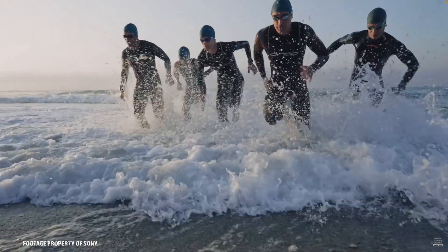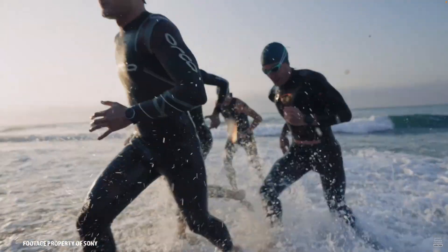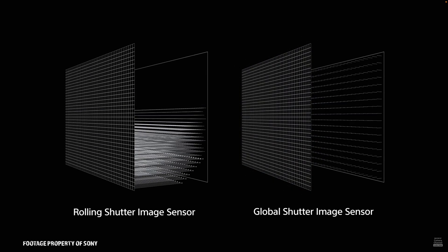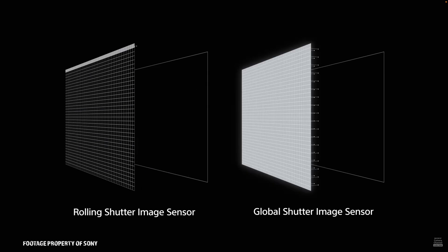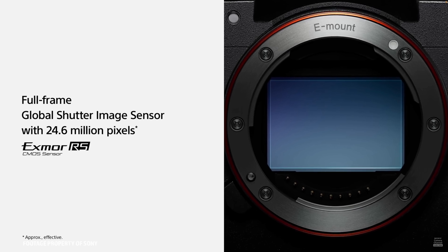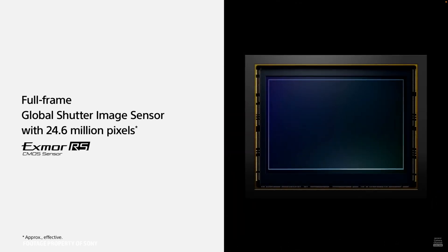What most cameras use, like the FX30 I'm shooting on right now, is what we call a rolling shutter. I'm sure you've heard this term used a lot on YouTube. Basically what it means is the way the CMOS sensor captures the image — it scans from the top to the bottom. Once it completes that scan, that is a frame. So whether you're dealing with video or photography, that's the way it works.